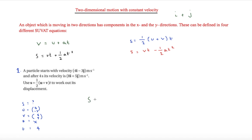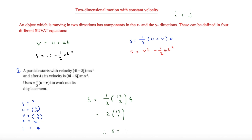So s is going to be equal to half, and this is where it comes in useful to have u plus v as vectors. u is 4, minus 3 and v is 8, 5. So 4 plus 8 is 12, and minus 3 plus 5 is 2. This gets multiplied by t which is 4, giving us 2 times the vector 12, 2. So finally, putting it back into i and j notation, we get 24i plus 4j.